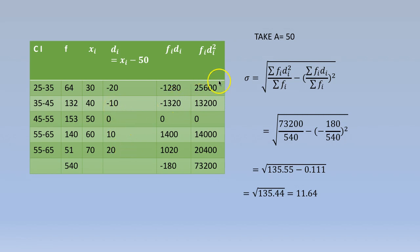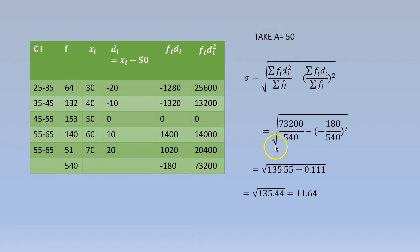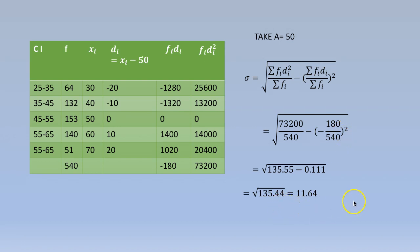We then calculate fi·di and fi·di squared. Using the shortcut method, sigma equals the square root of (summation fi·di squared by summation fi) minus (summation fi·di by summation fi) squared. Substituting gives the square root of 73200 by 540 minus (minus 180 by 540) squared, so sigma equals 11.64.